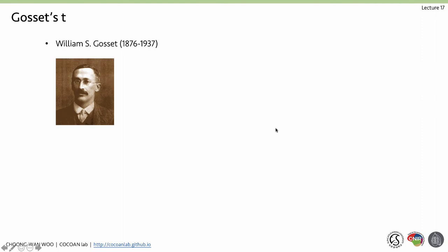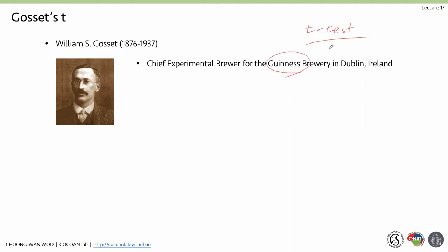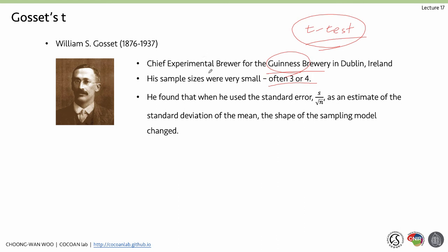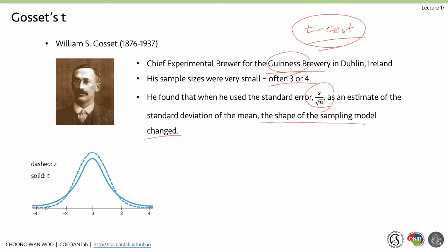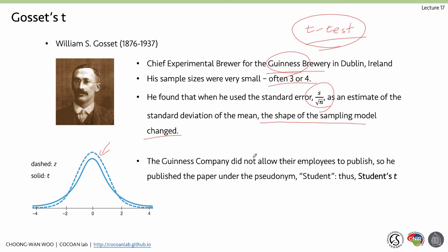There was a William Gossett, actually the chief experimental brewer for the Guinness Brewery in Dublin, Ireland. This famous t-test comes from the Guinness Brewery — interesting! His sample sizes were very small, often three or four, and he found that when using the standard error s divided by square root of n, the shape of the sampling model changed a little. The dashed line shows the normal z-distribution, and the solid line is what Gossett observed. Since the Guinness company did not allow employees to publish, he published under the pseudonym 'Student,' so we call it Student's t-test.